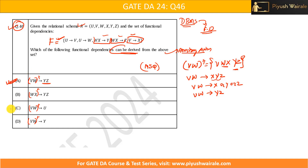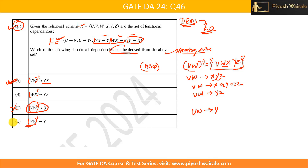Options C and D also have VW on the left-hand side, so we reuse the same closure. For option C, U is not present in the closure of VW, which means we cannot derive VW → U, so option C is not correct. For option D, Y is present in the closure of VW, so VW → Y is valid and option D is correct.